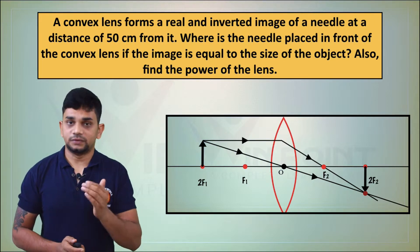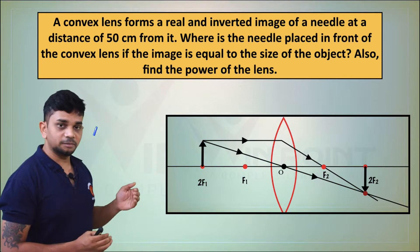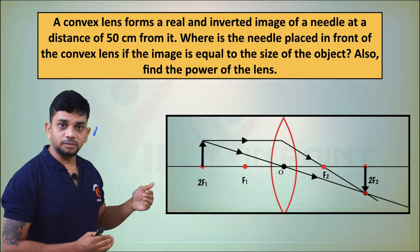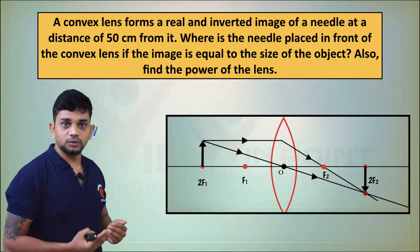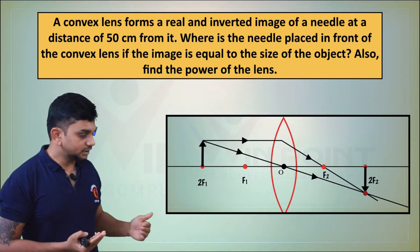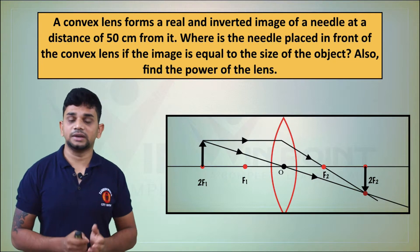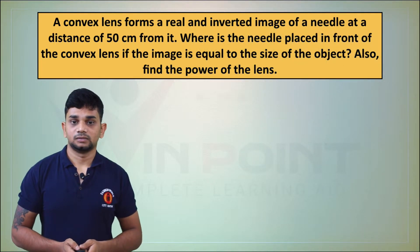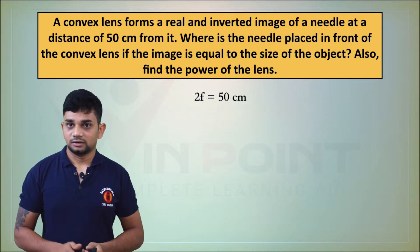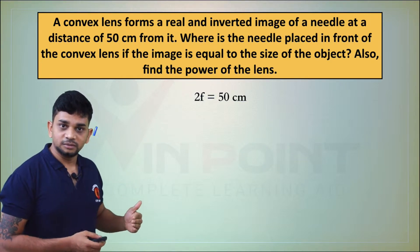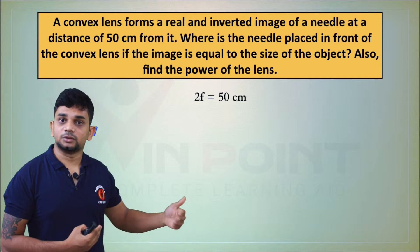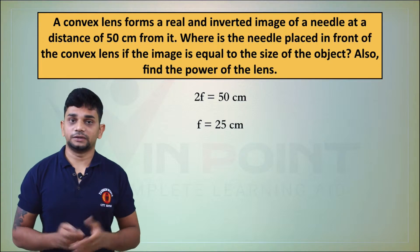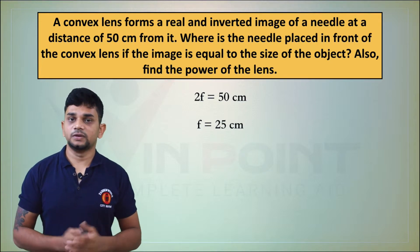This means 2f1 is 50 centimeters. Since 2f1 means it is double the focal length, and the object is placed at 50 centimeters from the lens, we have 2f equals 50 centimeters. We are also getting the image at 50 centimeters, which is 2f2. From this equation, the focal length f equals 25 centimeters.